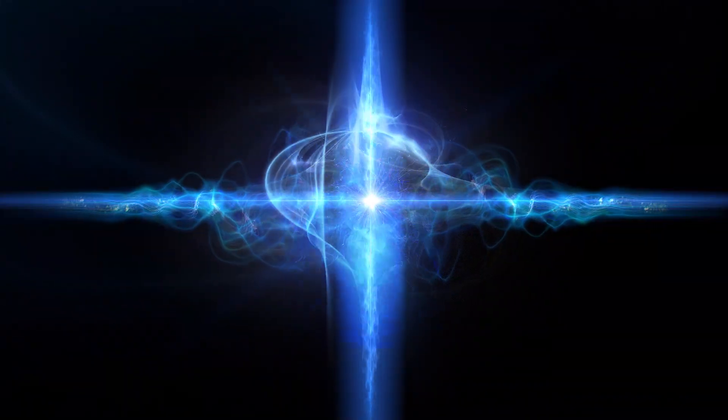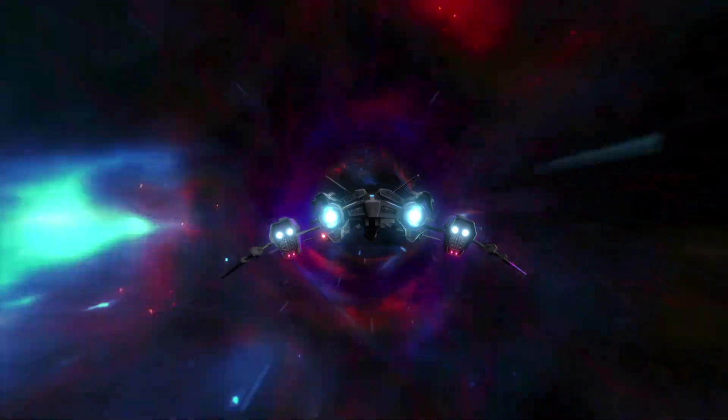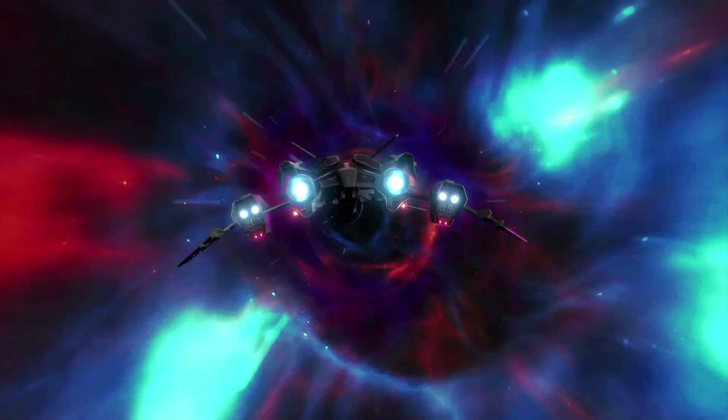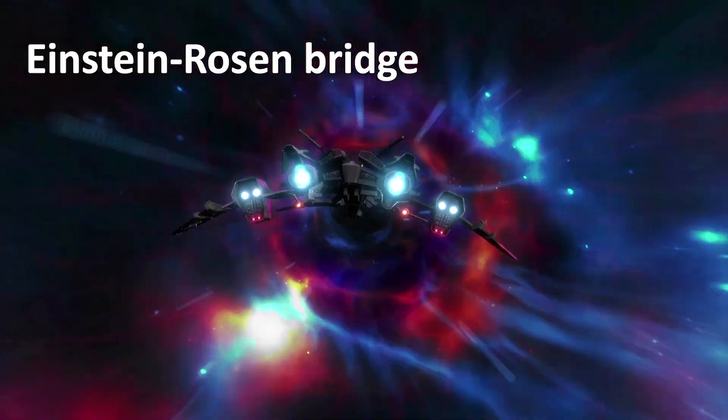The entry point and exit point exist as separate points in the cosmos. The tunnel that links those two points is called a wormhole, also known as the Einstein-Rosen Bridge.